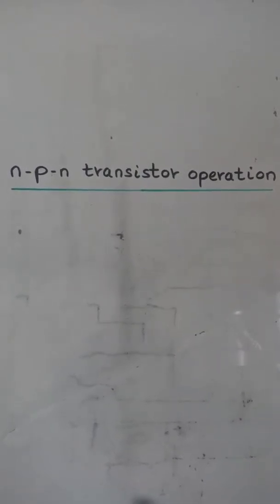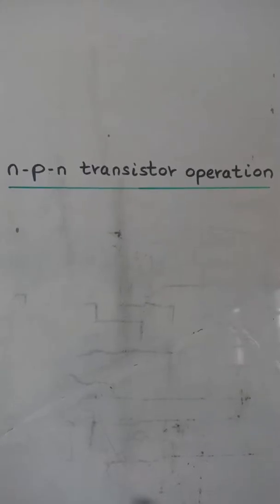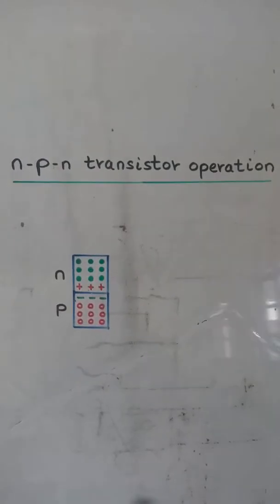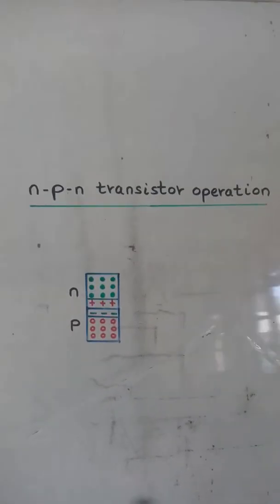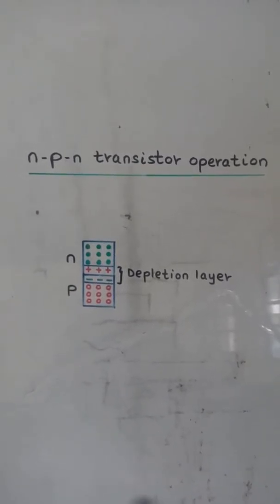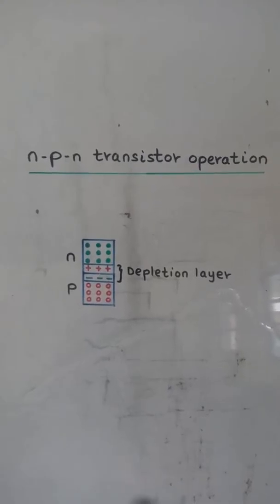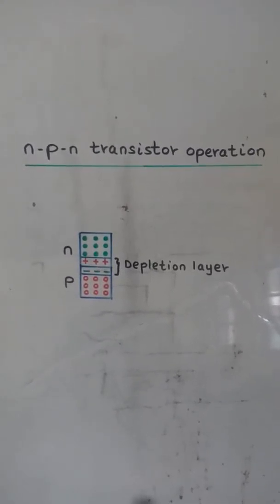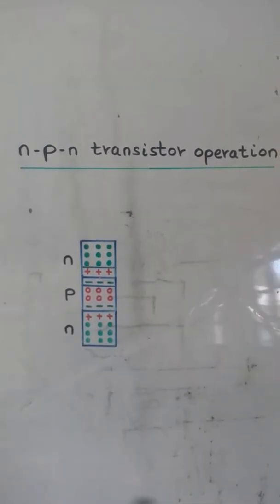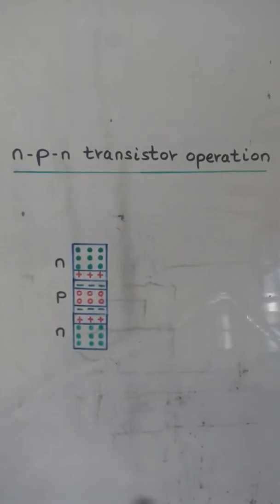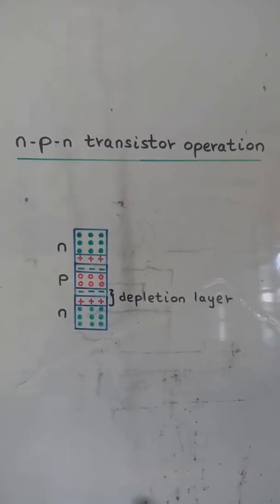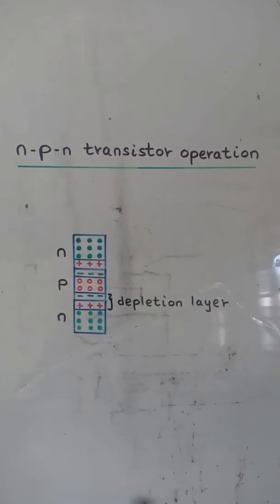NPN transistor operation. There is a depletion layer between the N type and the P type, and another depletion layer between the P type and the N type.